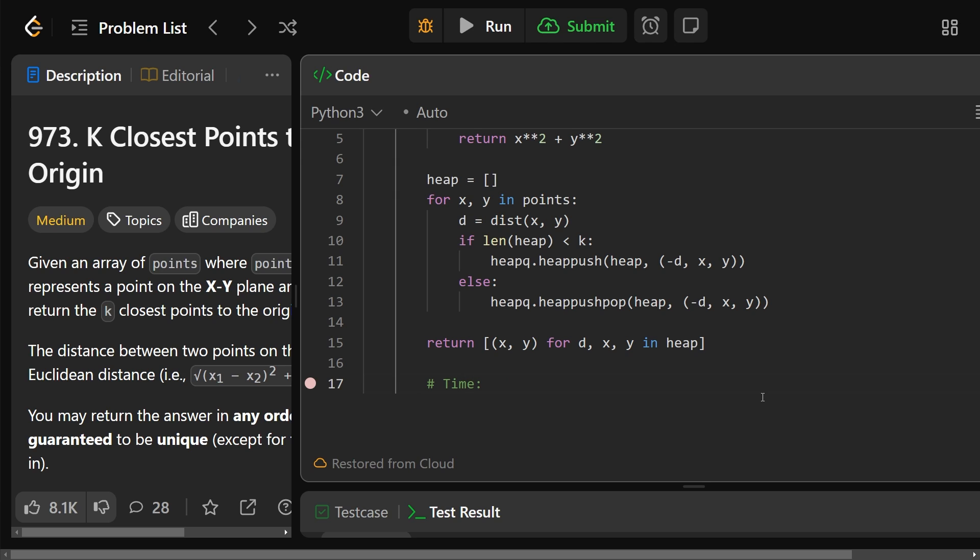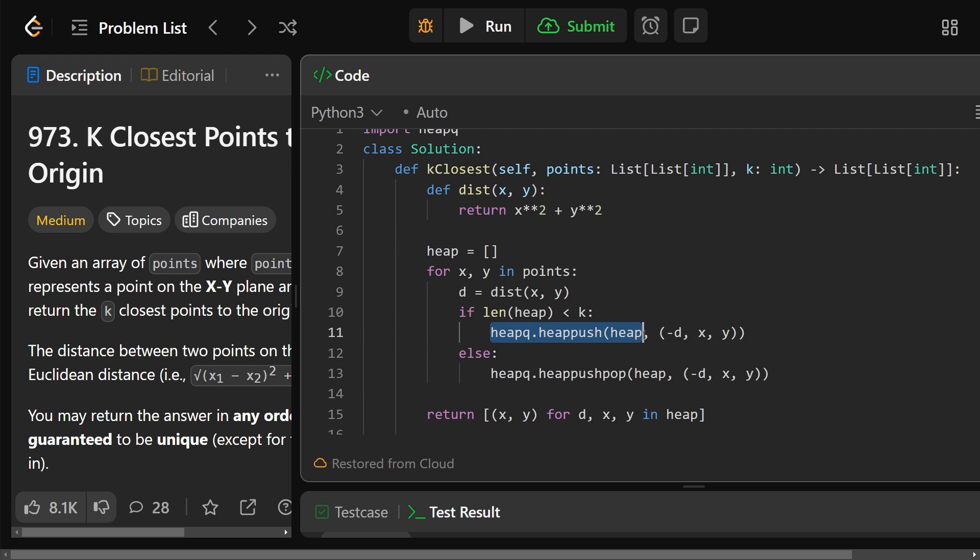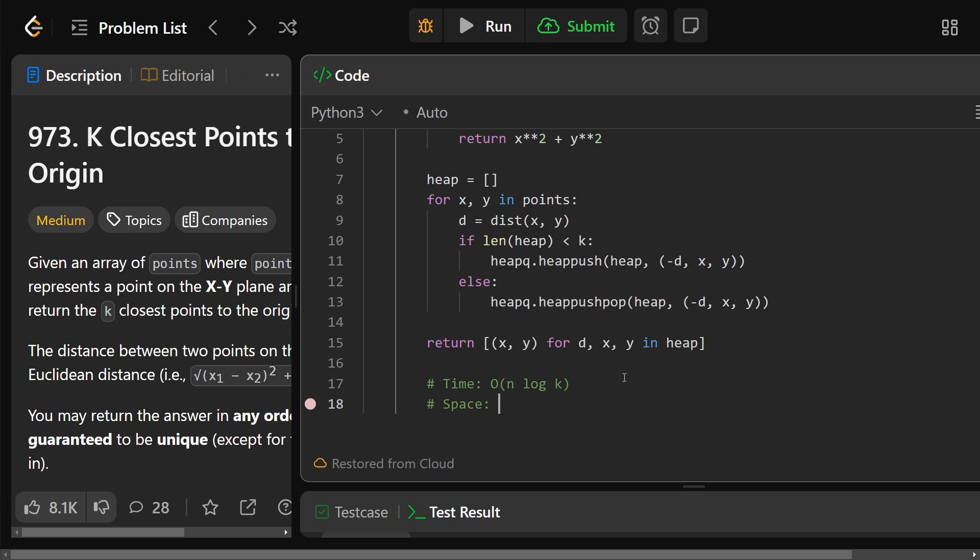So as we said, the time complexity of this algorithm is going to be O(n log k) time. And the space complexity is going to be, we have a heap is the only thing we're storing, and it's going to have at most k many things. So the space is going to be O(k). I hope this was helpful, guys. Drop a like if it was, and have a great day. Happy learning.